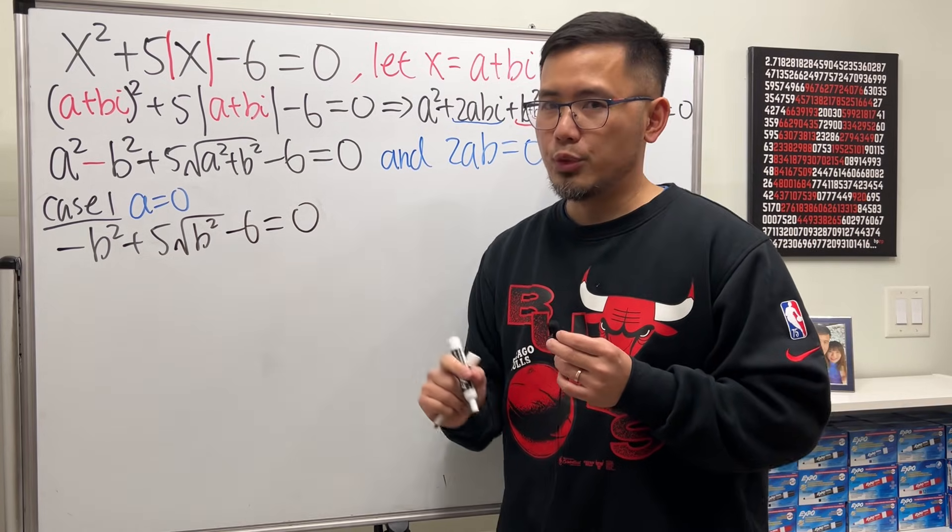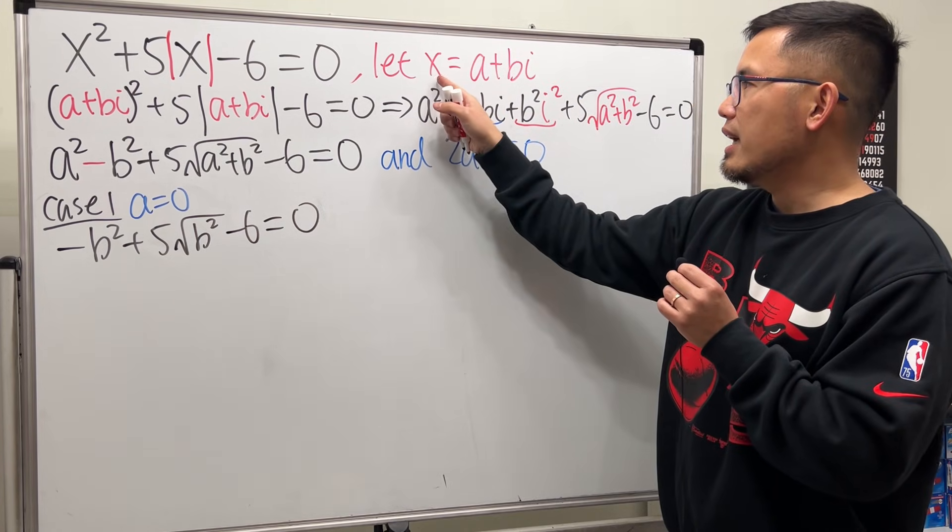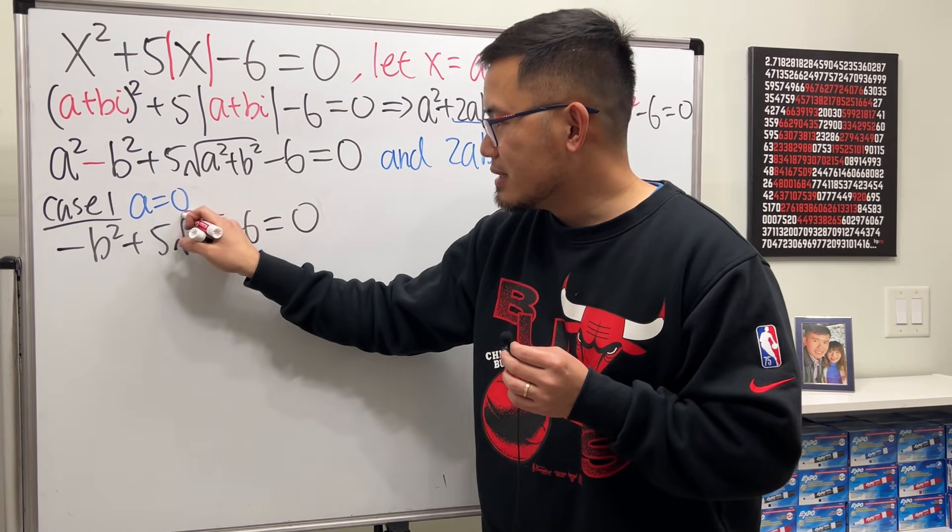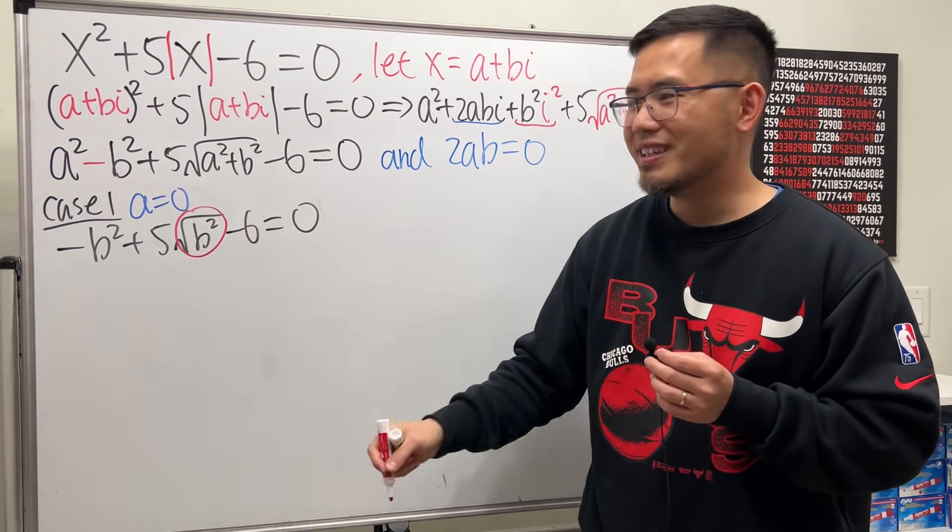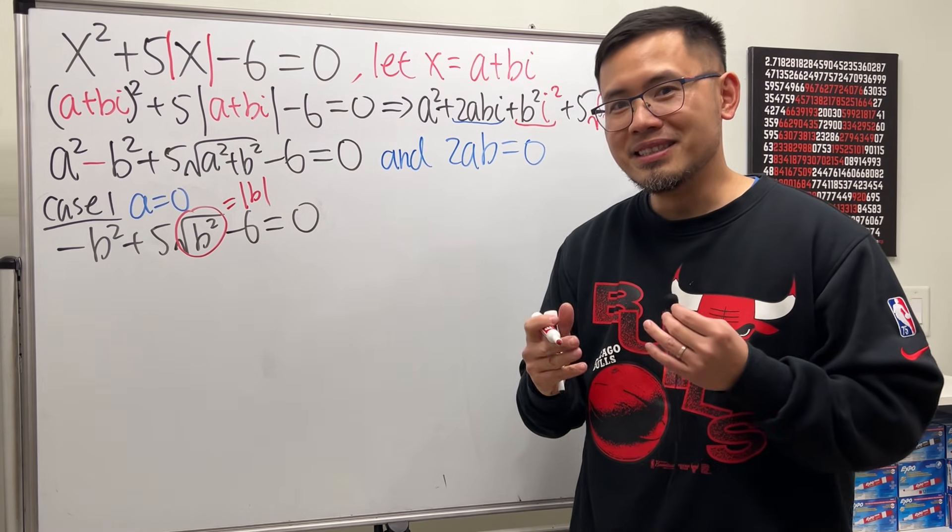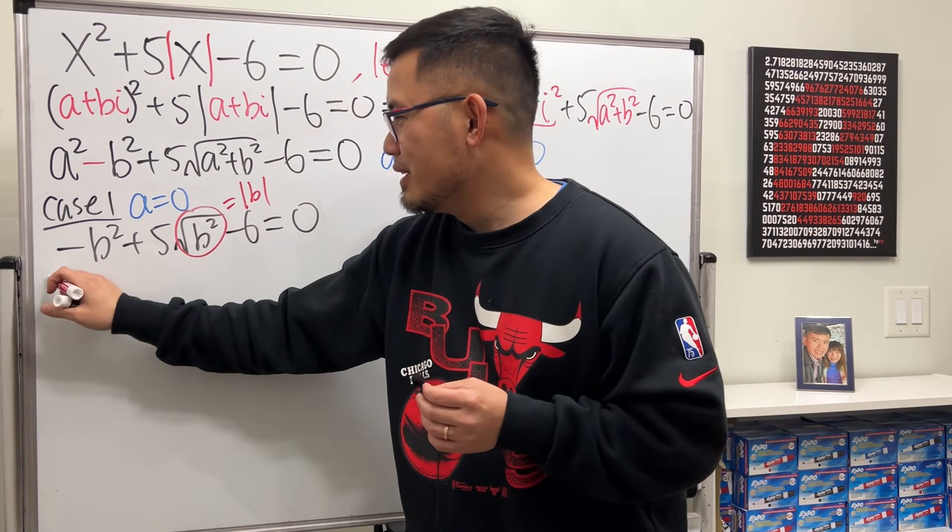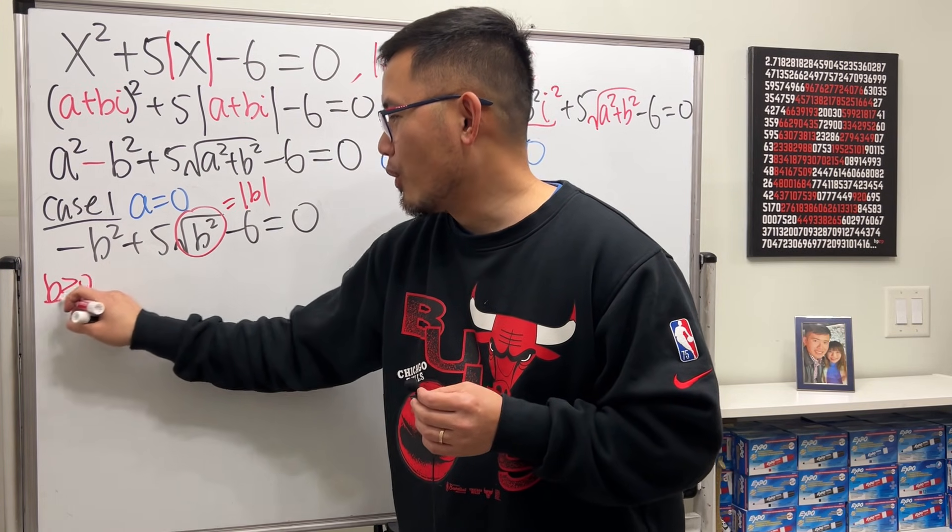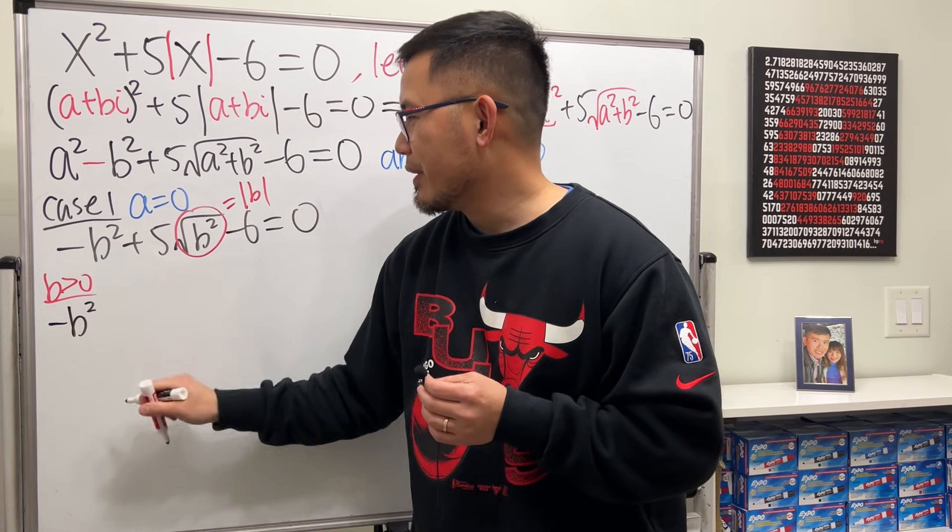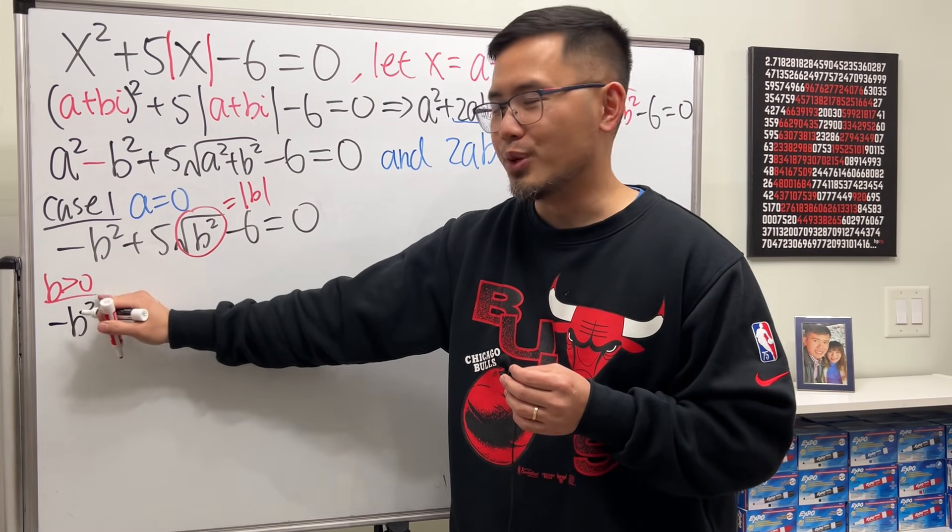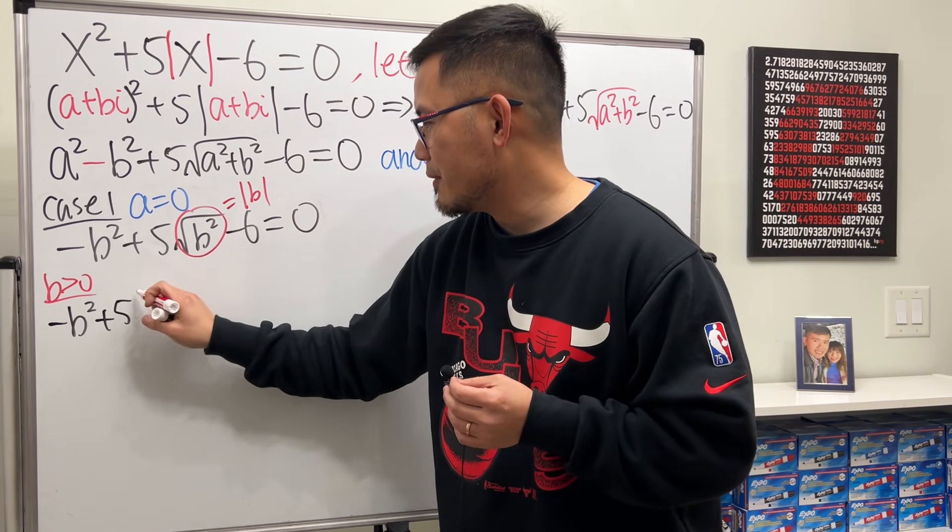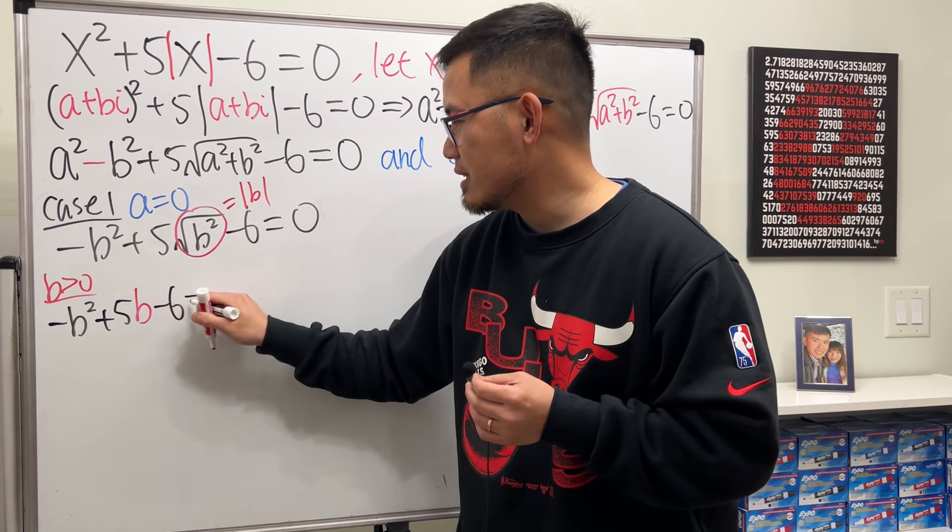b is a real number, because we said x is equal to a plus bi. a and b are both real. So that means the square root of b squared is just absolute value of b. And how do we take care of this? Consider cases. Either when b is greater than 0 or when b is less than 0. So here we have negative b squared, and then if b is greater than 0, absolute value of b is just b. So we'll just have plus 5b and then minus 6. That's equal to 0.